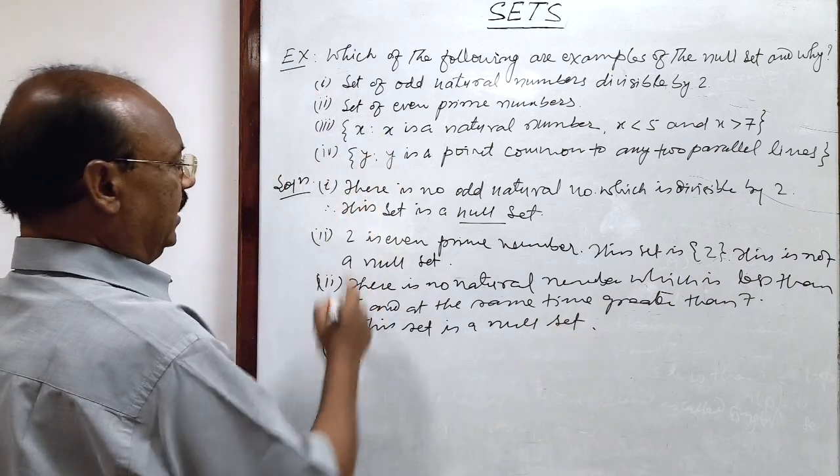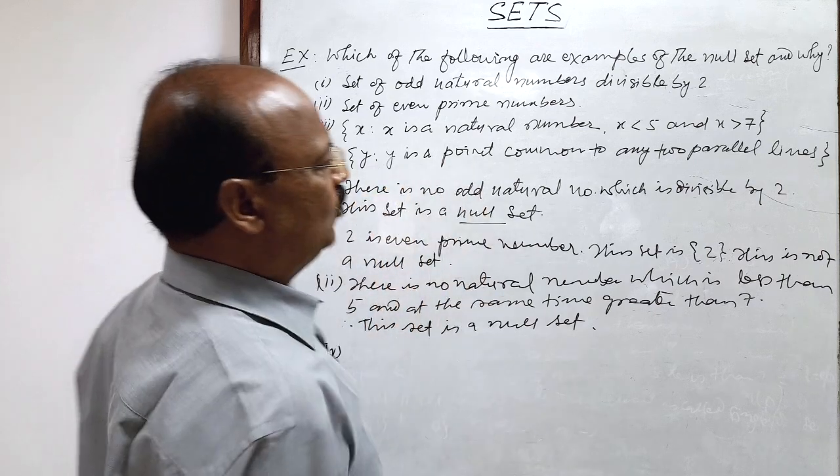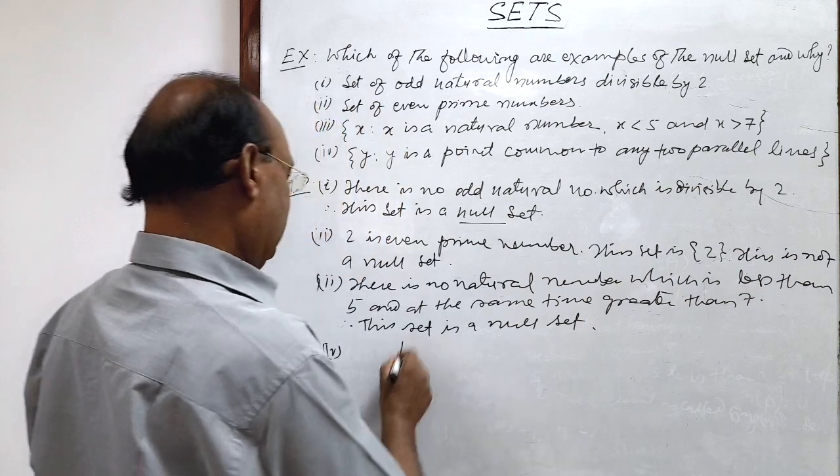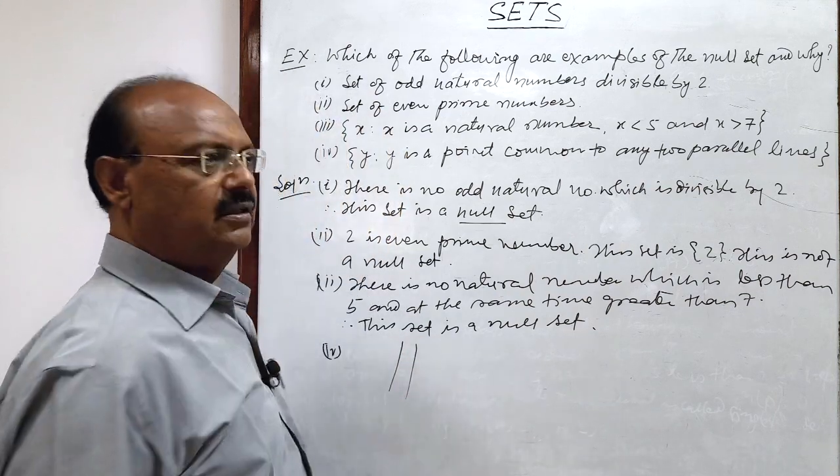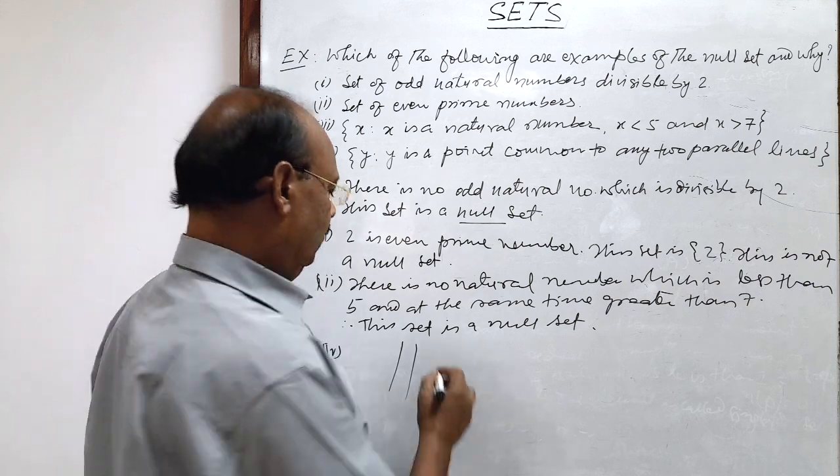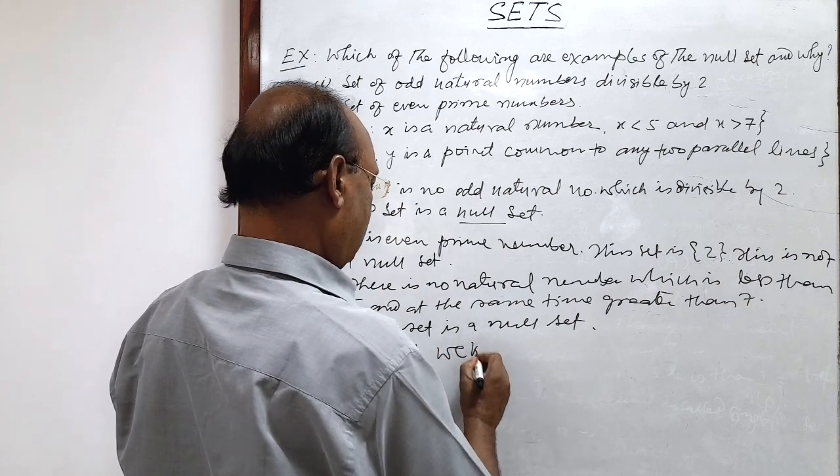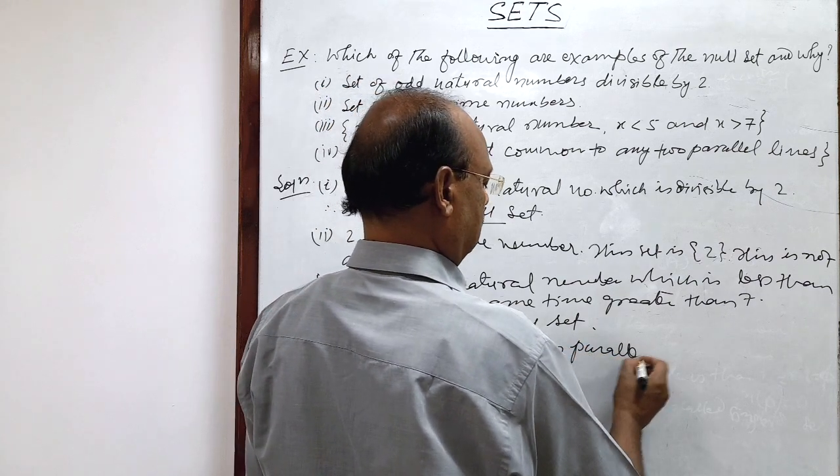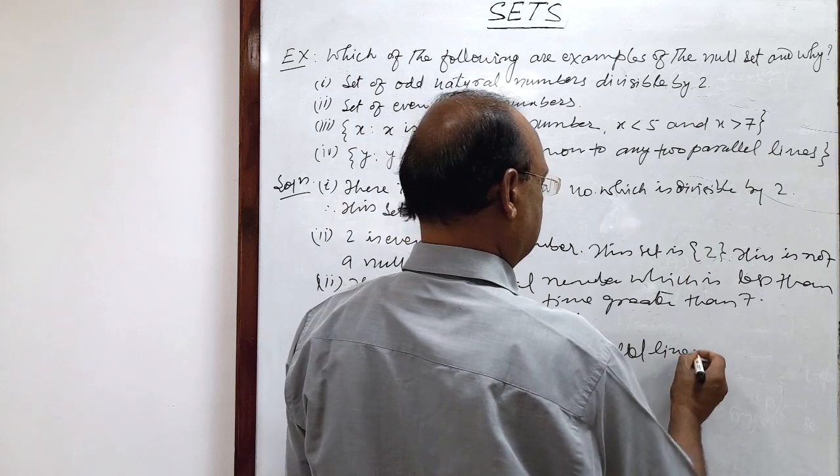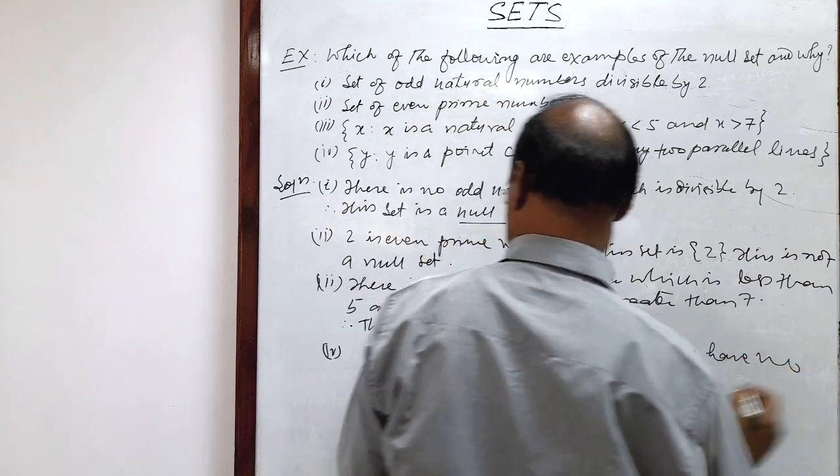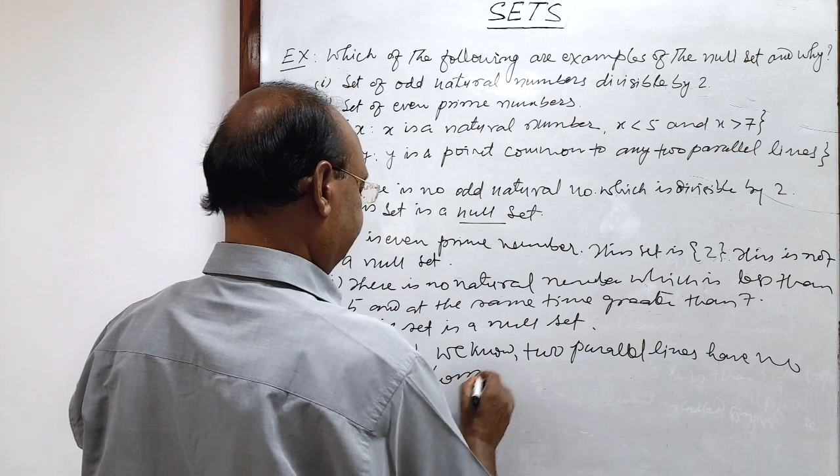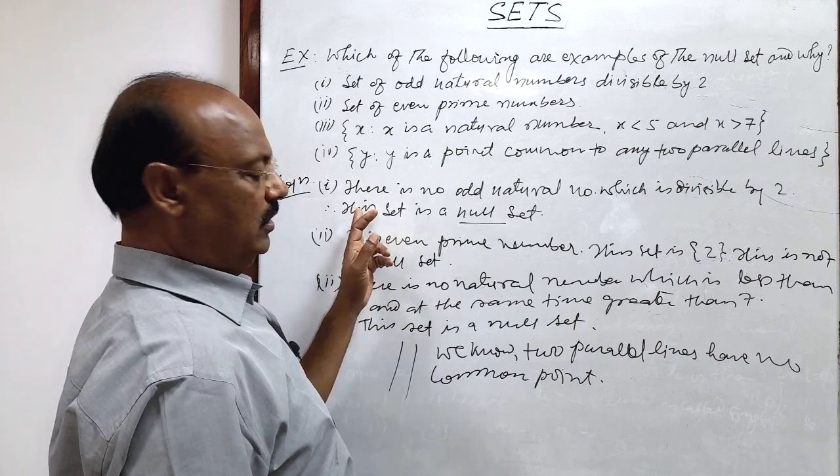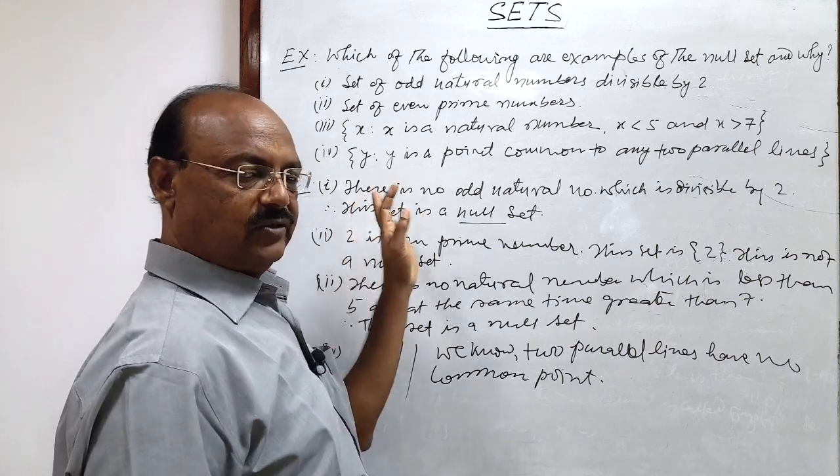Next, set y such that y is a point common to any two parallel lines. We know that two parallel lines have no common point. So there is no any element in this set, so therefore this set is also a null set.